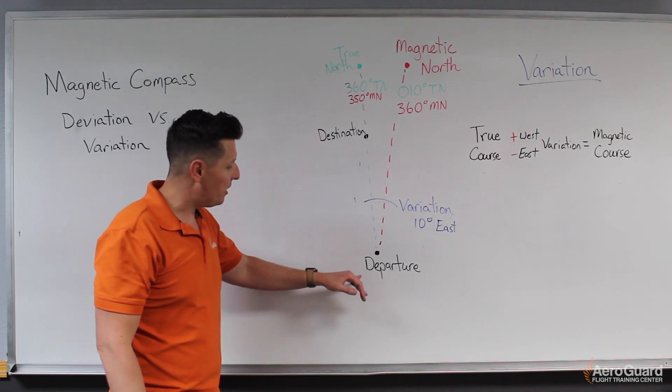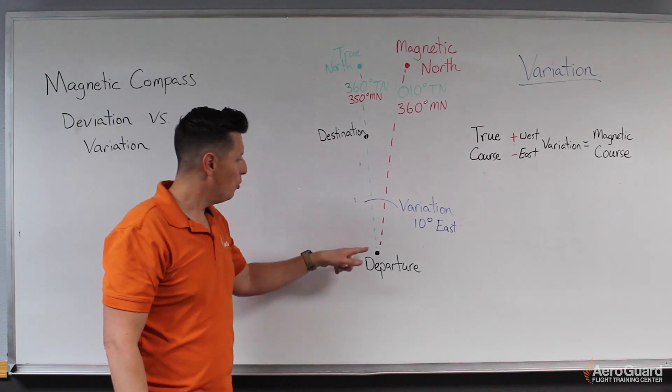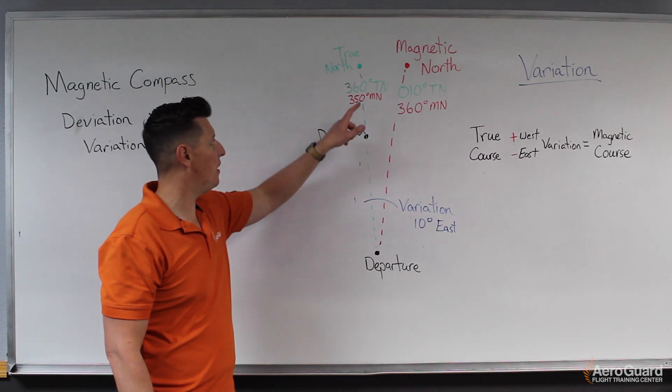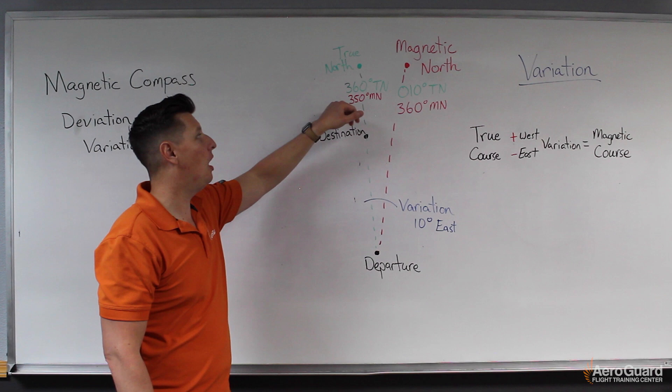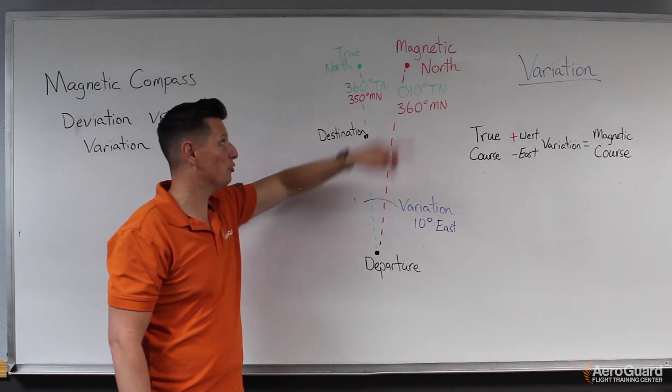And so if we plotted out this course from some departure to some destination, we would know, let's say that we'd have a true course of 3-6-0 degrees relative to true north.